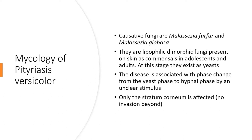In the pathogenesis of Pityriasis Versicolor, what happens is these yeast cells are converted to hyphae — that phase change is the one that results in the disease. The stimulus for this phase change is not very clear. The infection affects only the very superficial layer of the skin, that is the stratum corneum.